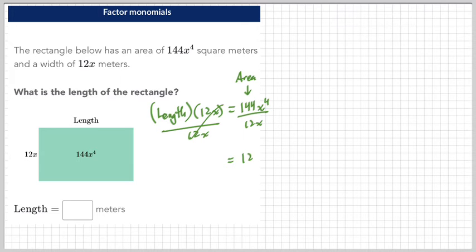What's 144 divided by 12? It's 12. And then what do you get when you go x⁴ divided by x? You guys remember what you do with the exponents?